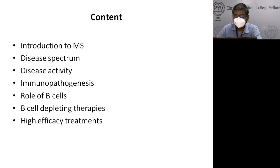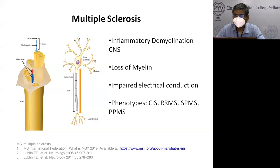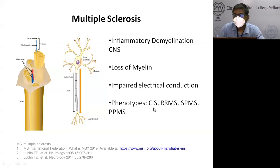We all know multiple sclerosis — we have a neuron, we have the axon, and the covering myelin. It is an inflammatory demyelinating disorder of the central nervous system, involving the brain and the spinal cord. There is loss of myelin; whenever there is demyelination, electrical conduction is impaired. The disease spectrum phenotypes include clinically isolated syndrome, relapsing-remitting MS, secondary progressive MS, and primary progressive MS.